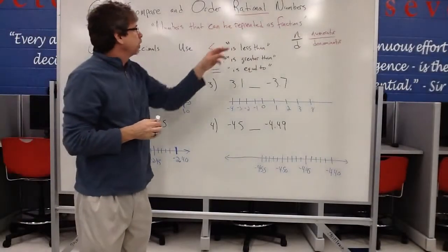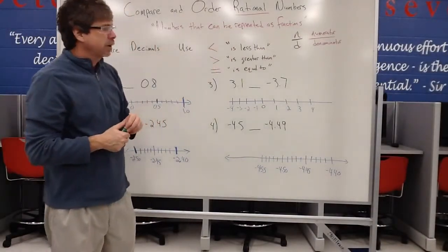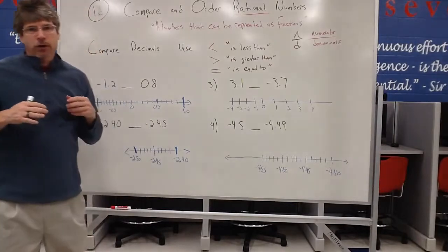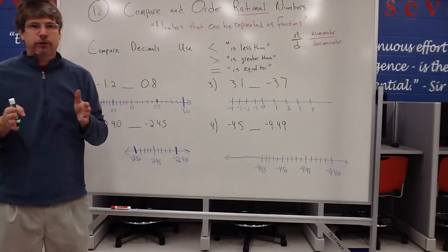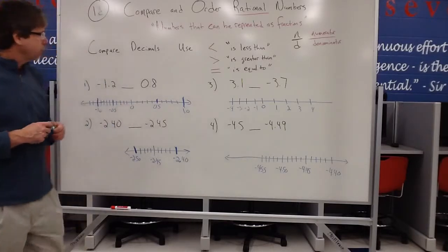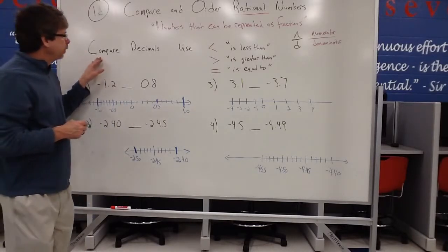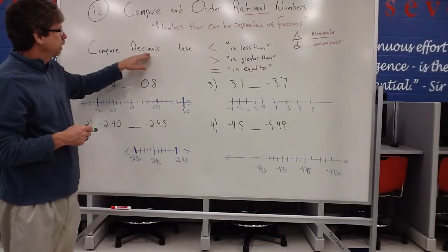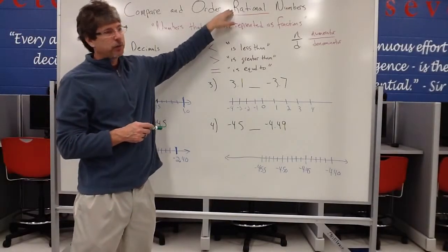Okay, so we talked about rational numbers are any numbers that can be expressed as fractions. And so remember, since decimals can be expressed as fractions, we can also work with decimals in this case. So this example, we're going to work with decimals, but decimals are examples of rational numbers.